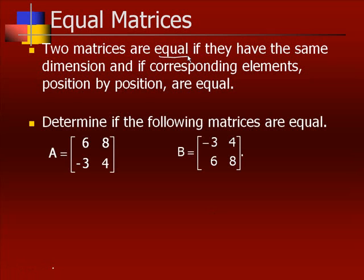Determine if the following matrices are equal — A and B. A is a 2 by 2 and B is a 2 by 2. They have the same values, but because they are located in different places, they are not equal. Row 1, column 1 is 6 here. Row 1, column 1 is negative 3 here. Therefore, matrix A is not equal to matrix B.